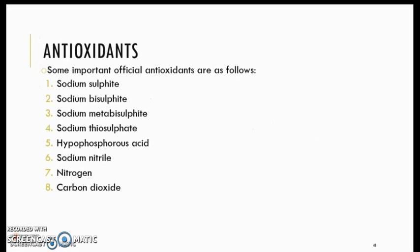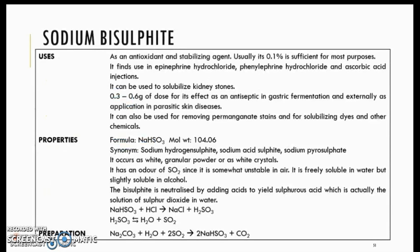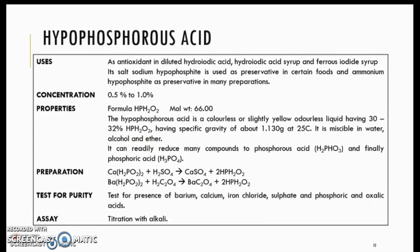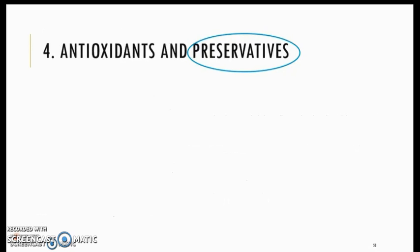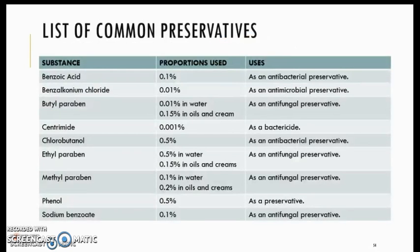These are the examples of antioxidants. Two types of antioxidants will be discussed in class: sodium bisulfite and hypophosphorous acid, with their monographs attached. Additionally, this is the list of common preservatives used in drug substances.